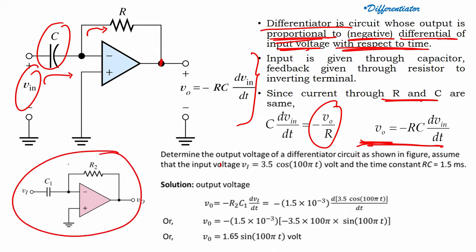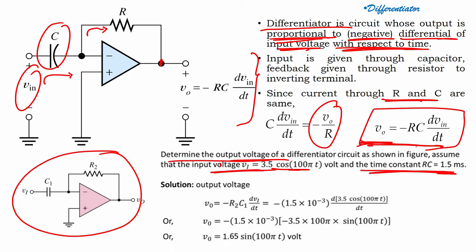For a given circuit, determine the output voltage of the differentiator circuit as shown in the figure. Assume that the input voltage is 3.5 volts and the time constant is 1.5 milliseconds. Since I know the formula Vo equals minus RC into dVin by dt, I can substitute the values and find Vo. When you solve it, you get Vo equals 1.65 sin(100π t) volts.